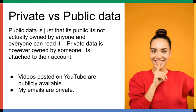One of the key things to learn about working with Google APIs is public and private data. Private data is owned by a user, and your application needs the permission of that user to access it. Public data, on the other hand, is data that is not owned by anyone, so your application doesn't need user permission to read it.